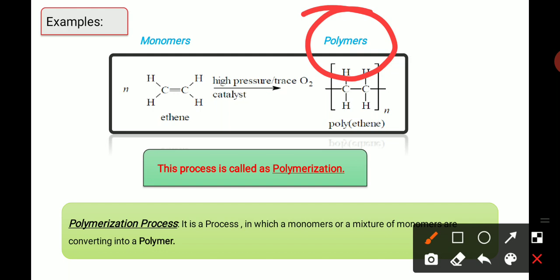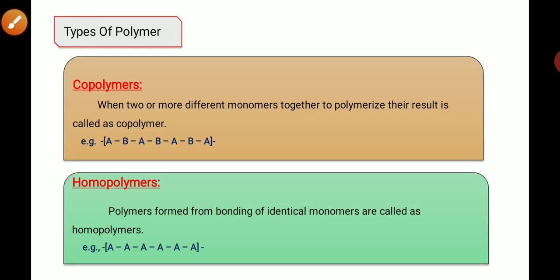The definition of the polymerization process: it is a process in which a monomer or mixture of monomers are converted into a polymer. This is called the polymerization process.